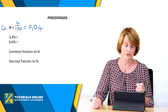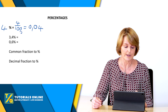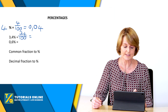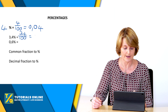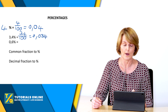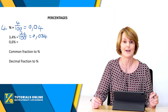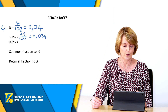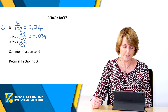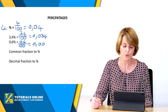Let me do a couple more examples. 3,4% over a hundred — if you take 3,4 divided by 100, it gives you 0,034, and that is the number you punch into your calculator when you need to do calculations. Similarly, 0,6% is 0,6 over a hundred, which equals 0,006.